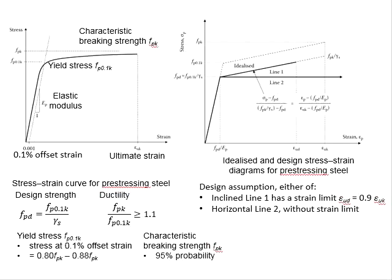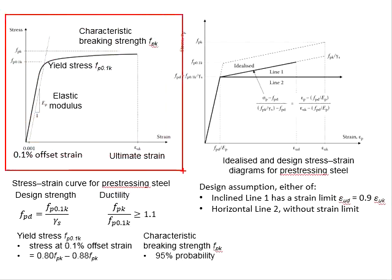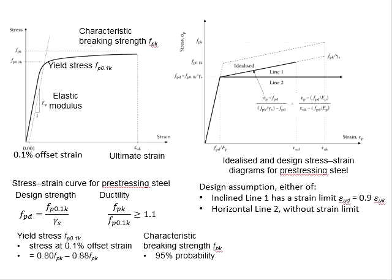Now, let us look into the properties of the pre-stressing steel. This is the typical stress-strain curve of a pre-stressing steel without sharp turning point. The yield point is not that obvious.